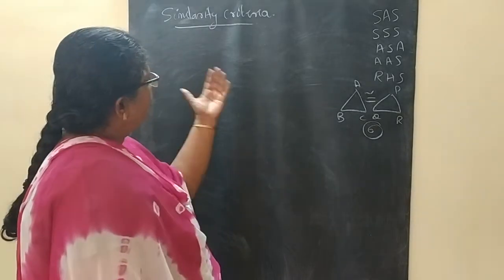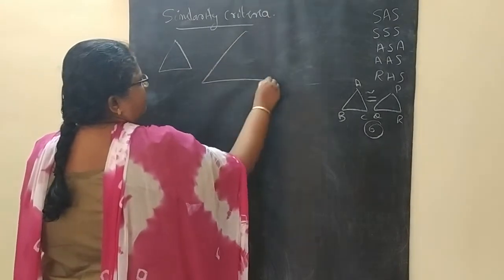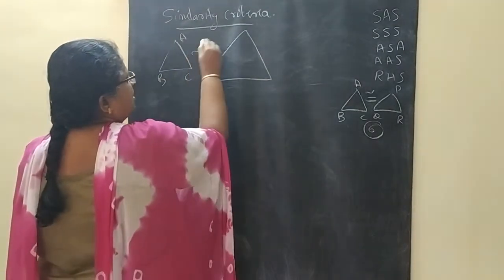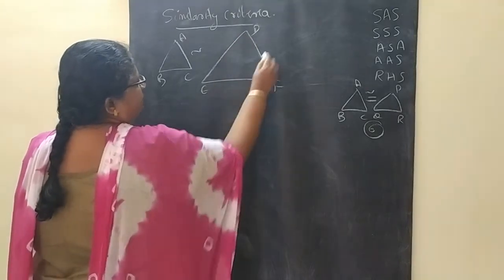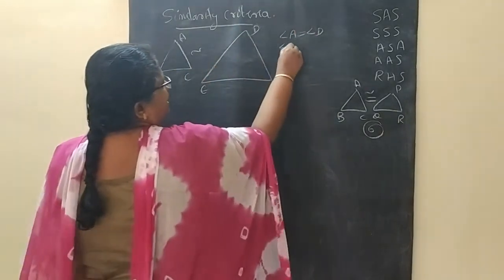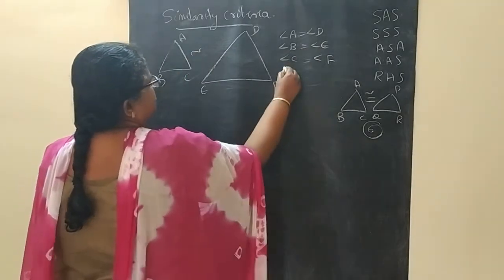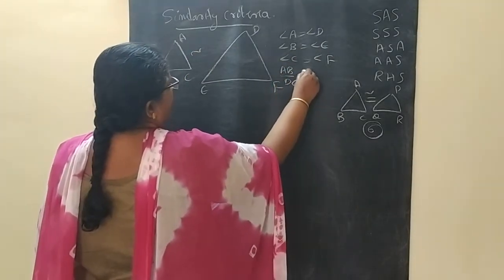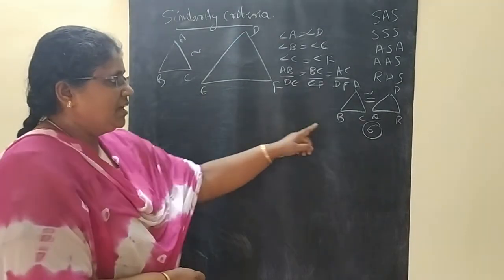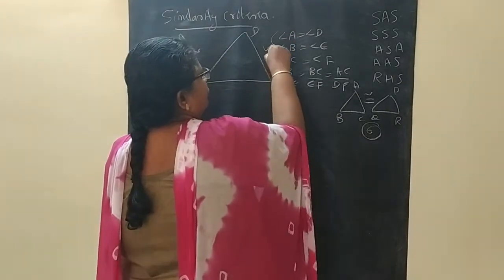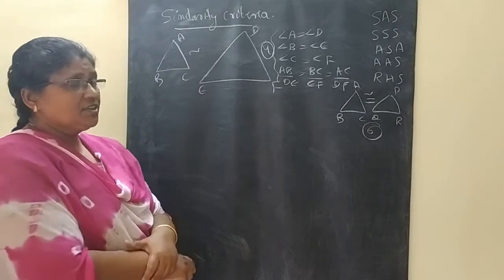Same type of criteria exists for proving two triangles similar. For triangle ABC similar to DEF, the conditions are: angle A equals angle D, angle B equals angle E, angle C equals angle F, and AB/DE equals BC/EF equals AC/DF. So there are 4 conditions total. But similarity criteria says there is no need to show all these 4.